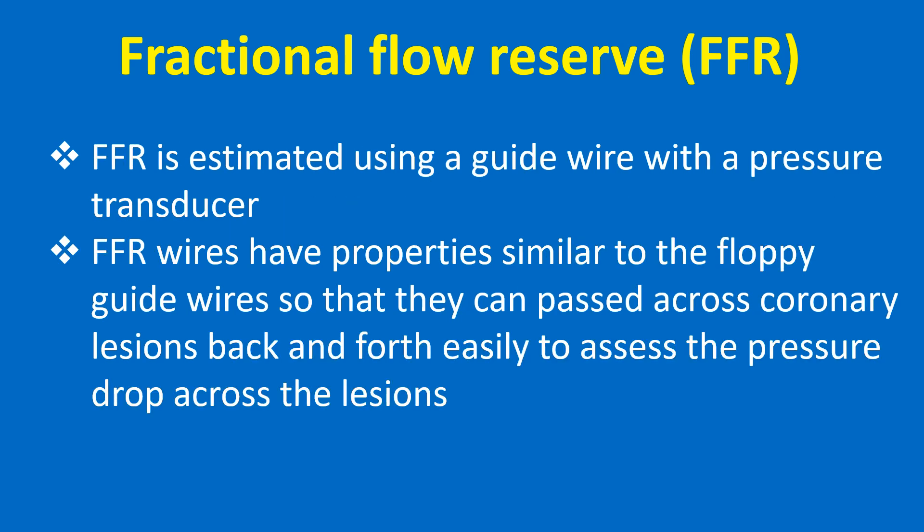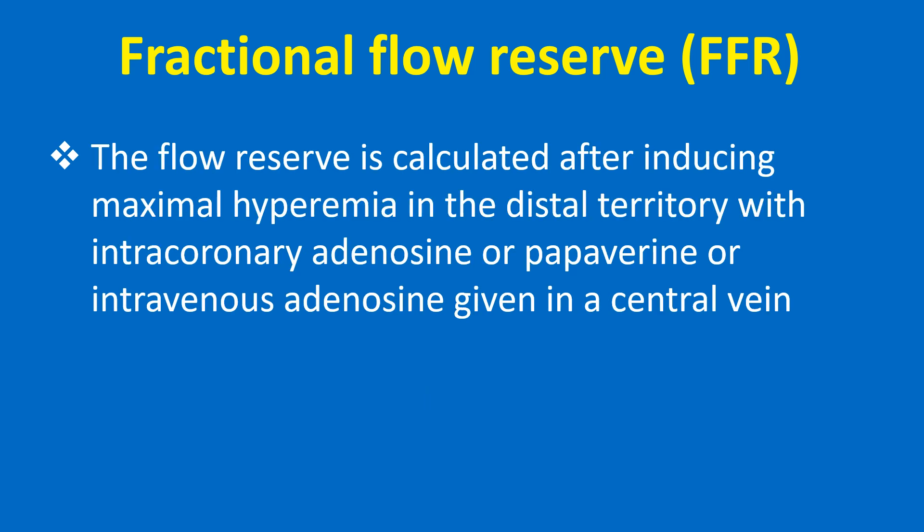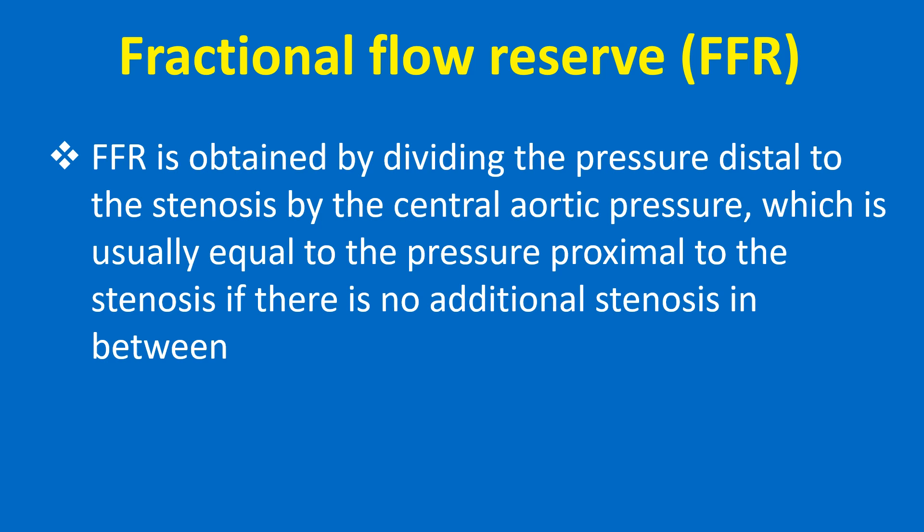FFR is estimated using a guide wire with a pressure transducer. FFR wires have properties similar to floppy guide wires so that they can pass across coronary lesions back and forth easily to assess the pressure drop across the lesions. The flow reserve is calculated after inducing maximal hyperemia in the distal territory with intracoronary adenosine or papaverine, or intravenous adenosine given in a central vein. FFR is obtained by dividing the pressure distal to the stenosis by the central aortic pressure, which is usually equal to the pressure proximal to the stenosis if there is no additional stenosis in between.